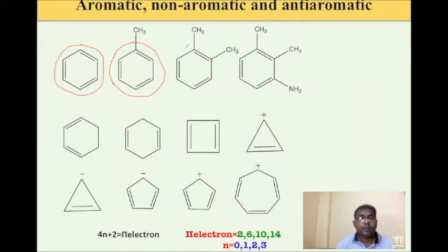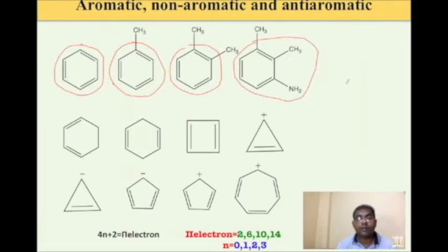It is toluene — it is also aromatic. It is xylene — this compound is also aromatic. It is 2,3-xylidine — it is also aromatic. Why is this compound aromatic? Because it follows the 4n+2 pi electron Hückel's rule.